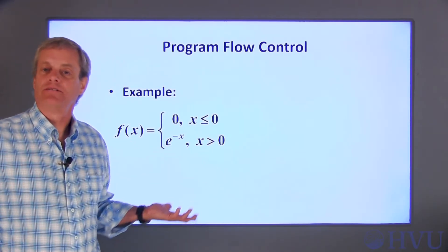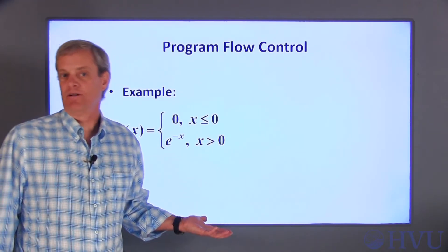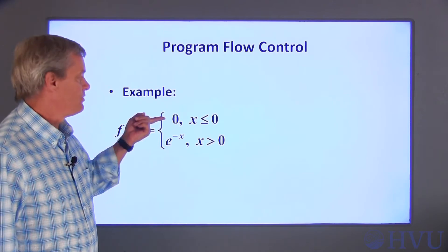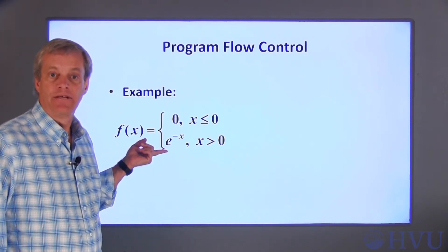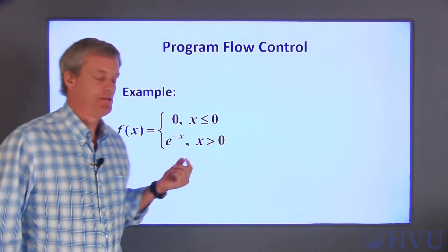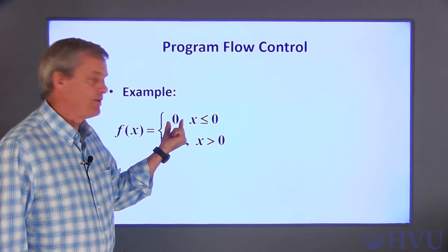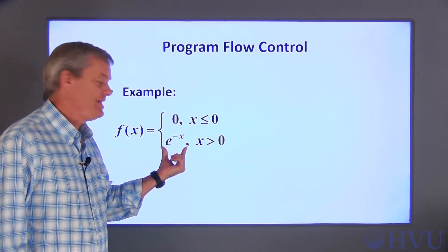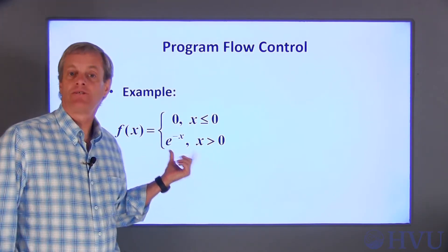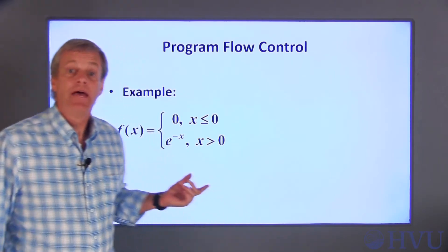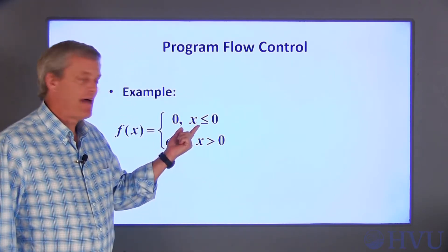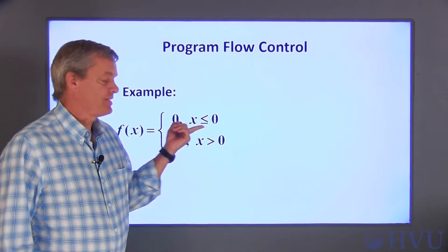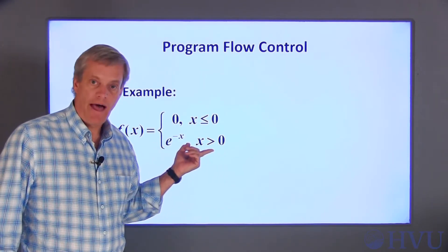Here is one example of a calculation that depends upon a condition. The function is defined differently over two different ranges of x. If x is less than or equal to zero, the value of the function is zero, and if x is greater than zero, the value of the function is e to the negative x, or a decaying exponential. Evaluating this function for some value of x requires you to make a decision: is x less than or equal to zero, or not?